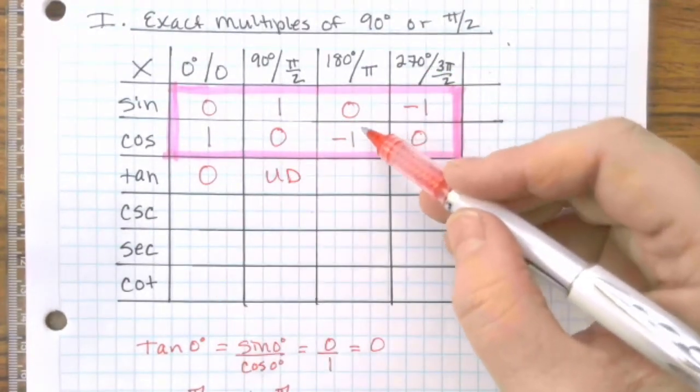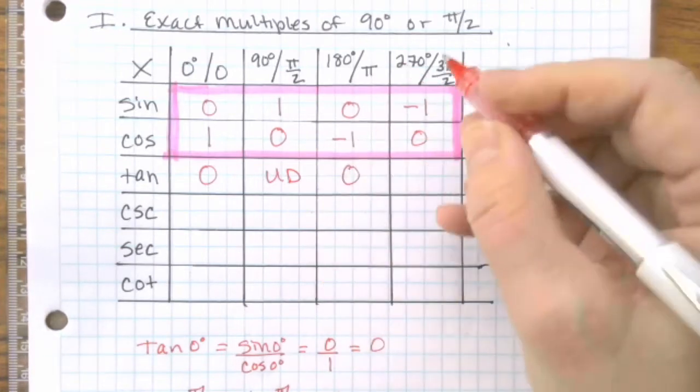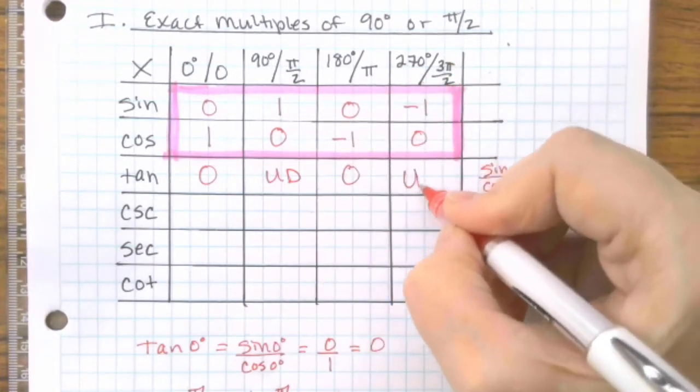Taking these over each other, 0 over a negative 1 is 0. Negative 1 over 0 is undefined.